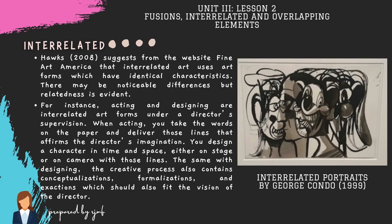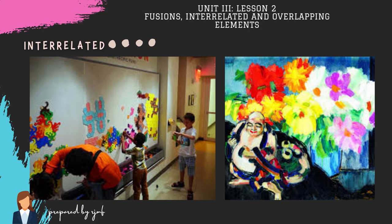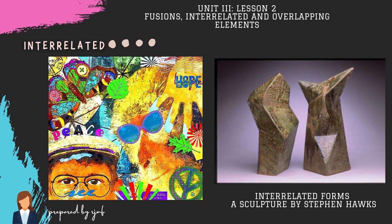Interrelated. Hawke suggests from the website Fine Art America that interrelated art uses art forms which have identical characteristics. There may be noticeable differences but relatedness is evident. For instance, acting and designing are interrelated art forms under a director's supervision. When acting, you take the words on the paper and deliver those lines that affirm the director's imagination. You design a character in time and space, either on stage or on camera with those lines. The same with designing — the creative process also contains conceptualizations, formalizations, and executions which should also fit the vision of the director. It is also sometimes portrayed in visual arts just like painting, drawing, sculpture, and the like.